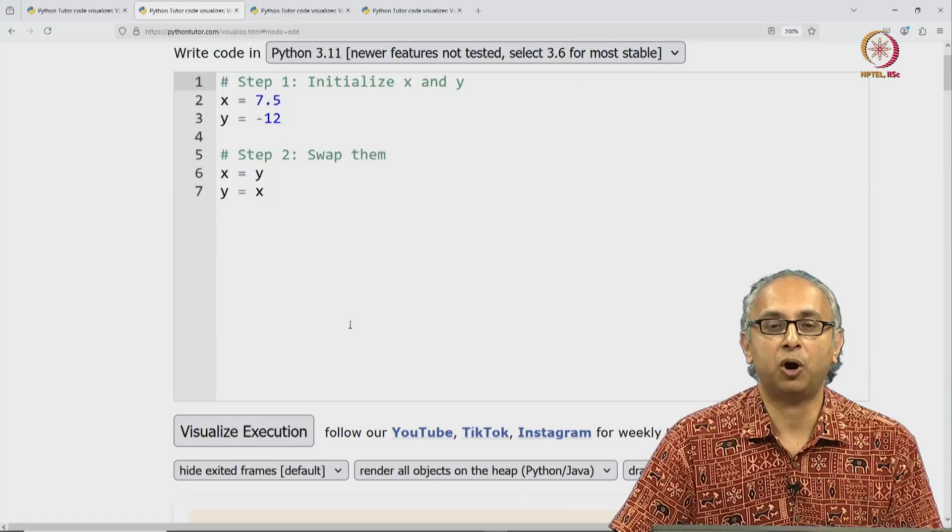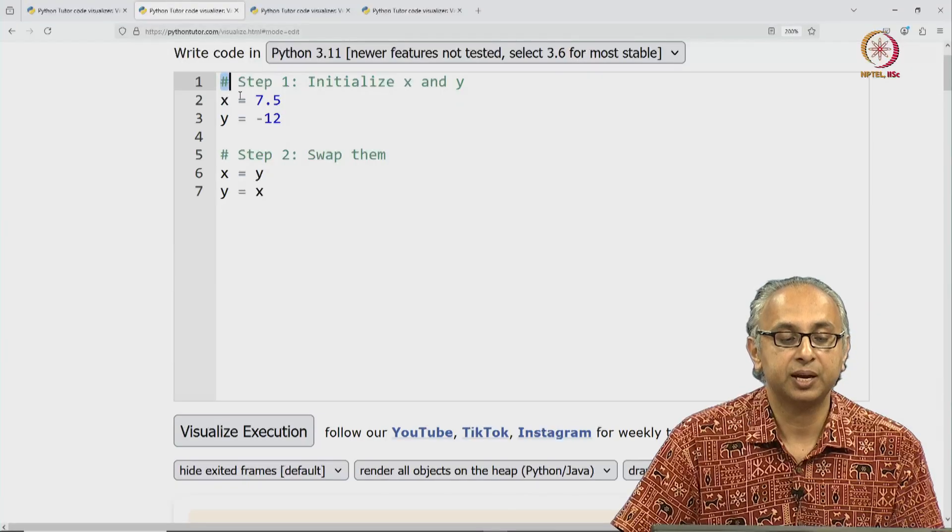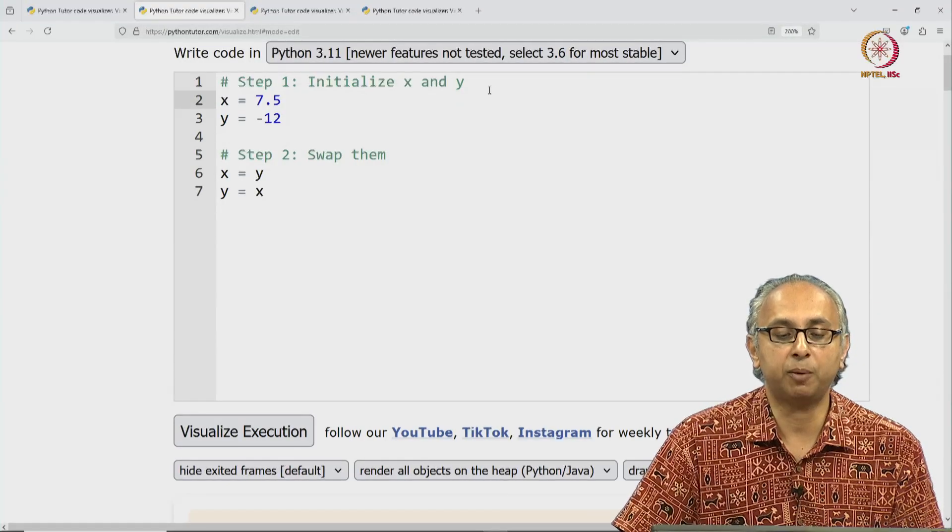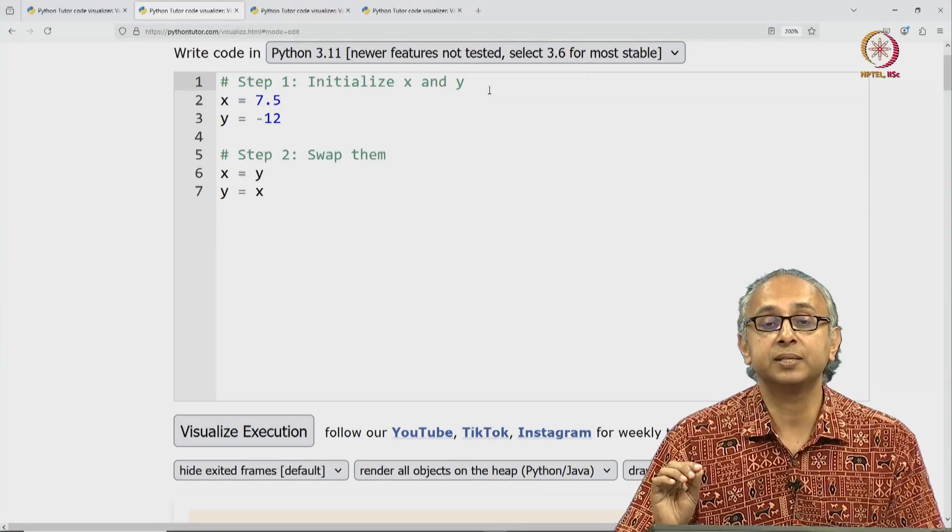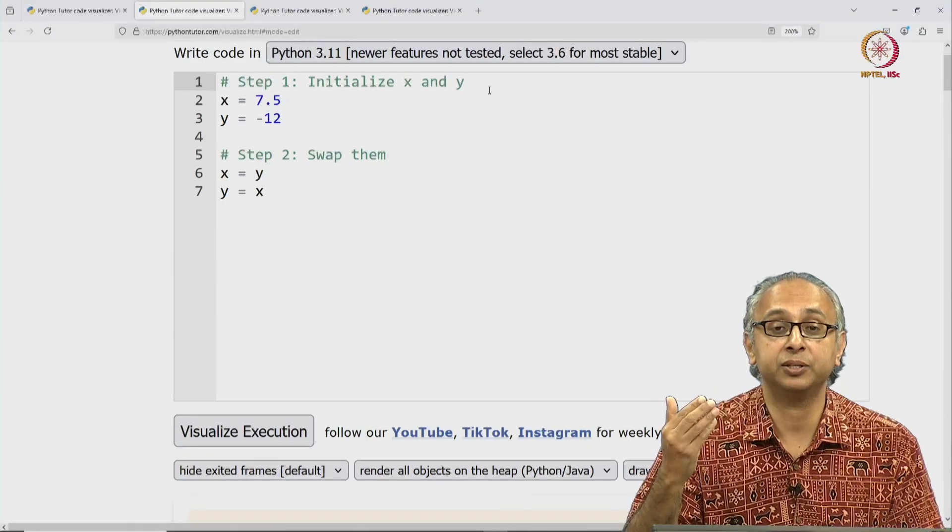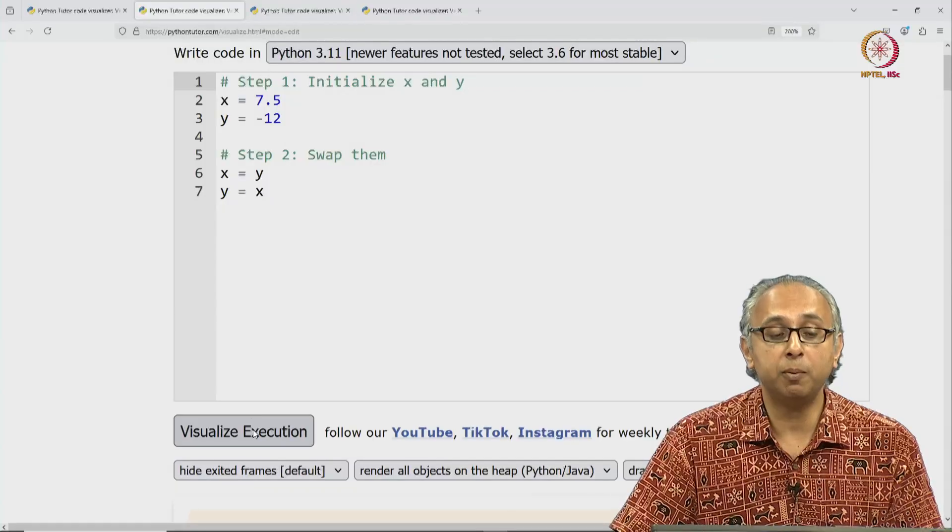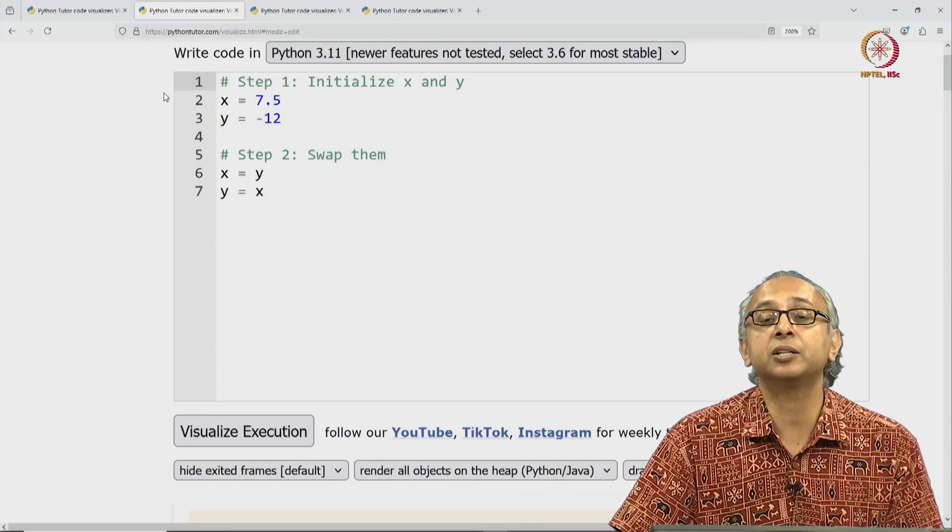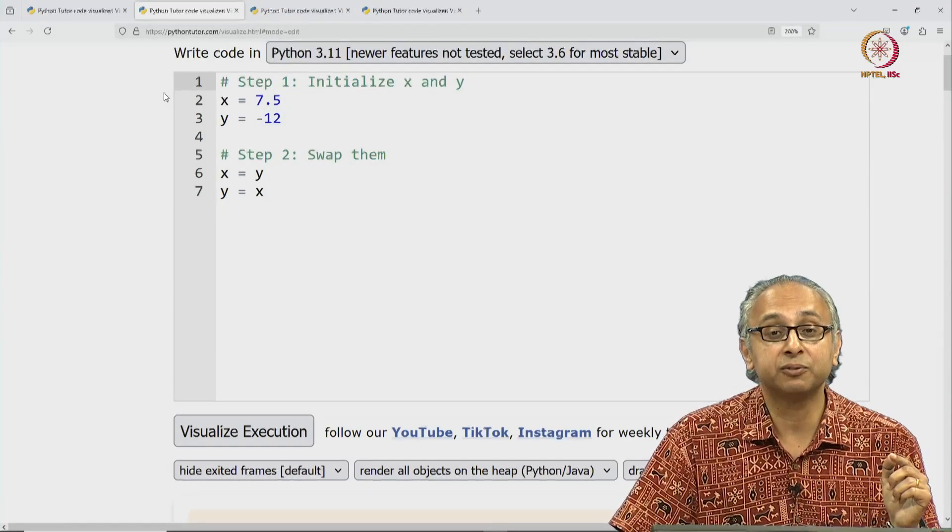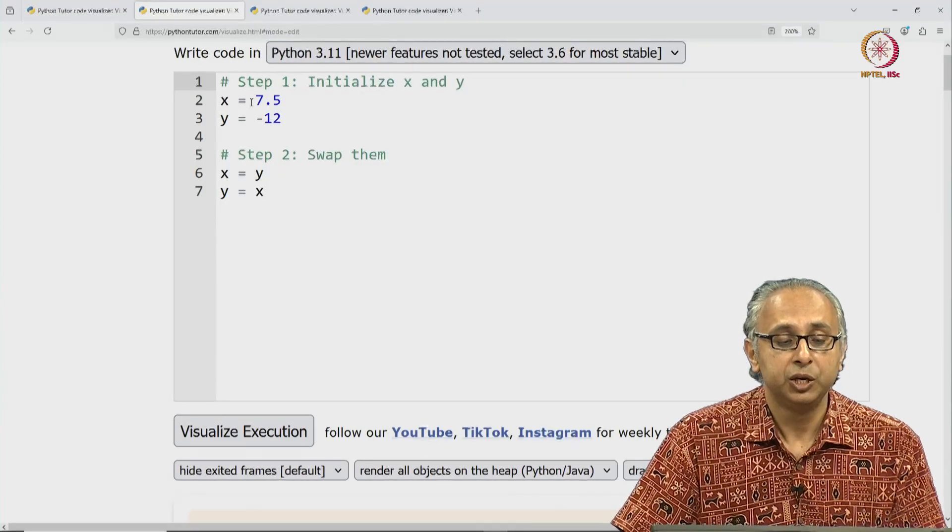So here is this code on Python Tutor. On line one, notice that we start with this hash symbol. This is a comment and this means a statement that is ignored by Python Tutor. When I click on visualize execution, you would normally expect the red arrow to start on line one. But when we click on this visualization, observe where the red arrow actually starts.